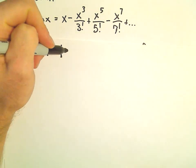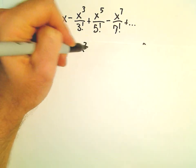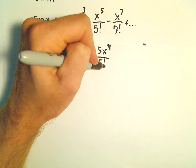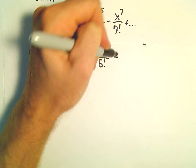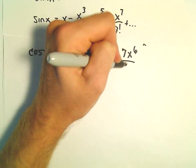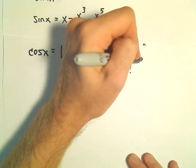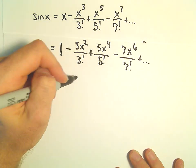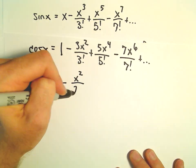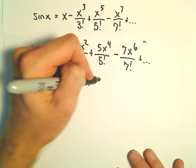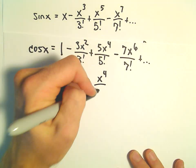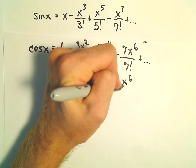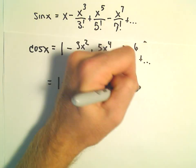The derivative of x will be one. Then we'll get three x squared over three factorial plus five x to the fourth over five factorial minus seven x to the sixth over seven factorial, etc. We can simplify this: three over three factorial leaves us with two factorial in the denominator, then x to the fourth — five over five factorial simplifies to four factorial, and then x to the sixth over six factorial, etc.